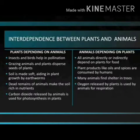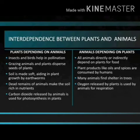Next is interdependence between organisms — plants and animals. Plants depend on animals: insects and birds help in pollination; grazing animals and plants disperse seeds; earthworms make the soil soft, aiding plant growth; dead remains of animals make the soil rich in nutrients; and carbon dioxide released by animals is used for photosynthesis in plants. Animals, in turn, directly or indirectly depend on plants for food. Plant products like oil and spices are consumed by humans; many animals find shelter in trees; and oxygen released by plants is used by animals for respiration.